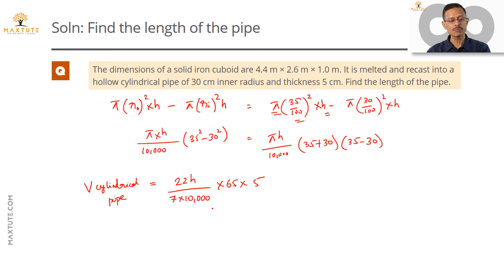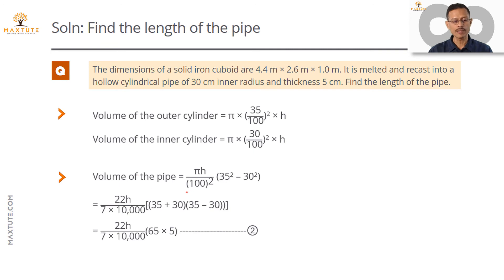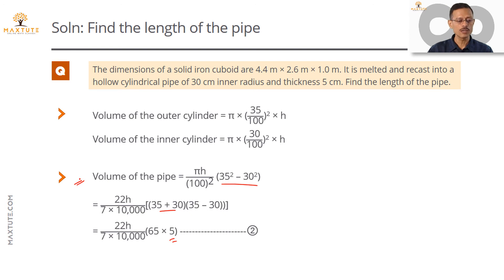To summarize in printed form: the outer radius is 35/100 and the inner radius is 30/100. The volume of the pipe equals π h / 100² × (35² − 30²), which is of the form a² − b². With a + b = 65 and a − b = 5, and writing π as 22/7, the volume of the pipe is 22h / (7 × 10,000) × 65 × 5.